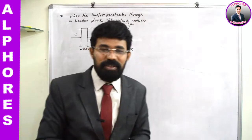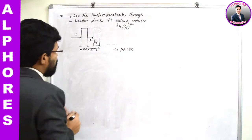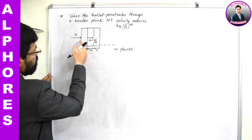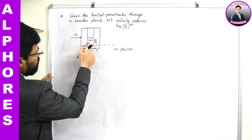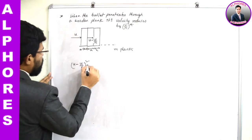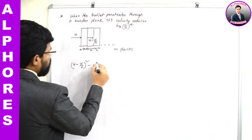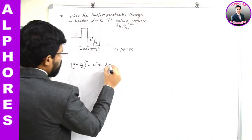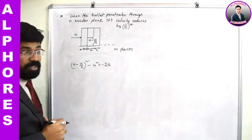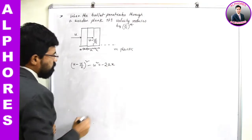To find m, I will make use of the kinematic equation v² - u² = 2as, because I know the initial and final velocities when the bullet passes through one plank. The final velocity after the first plank is u - u/n. So: (u - u/n)² - u² = -2ax (using negative sign for deceleration, distance = x). This is equation number 1.